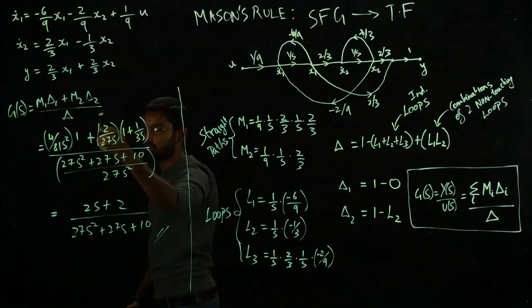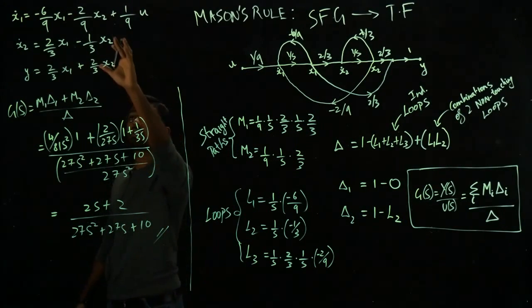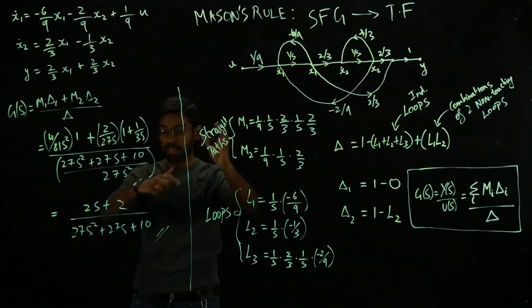And then finally, we simply use this formula, which is the Mason's rule. What we have done is simply summation of Mi's and del i's over i, basically how many straight paths you have over this big del right here. And over here, you can see that I've done the same, and arrived at the transfer function. We started off with the state space equation, and then got to the signal flow graph, and then the transfer function.